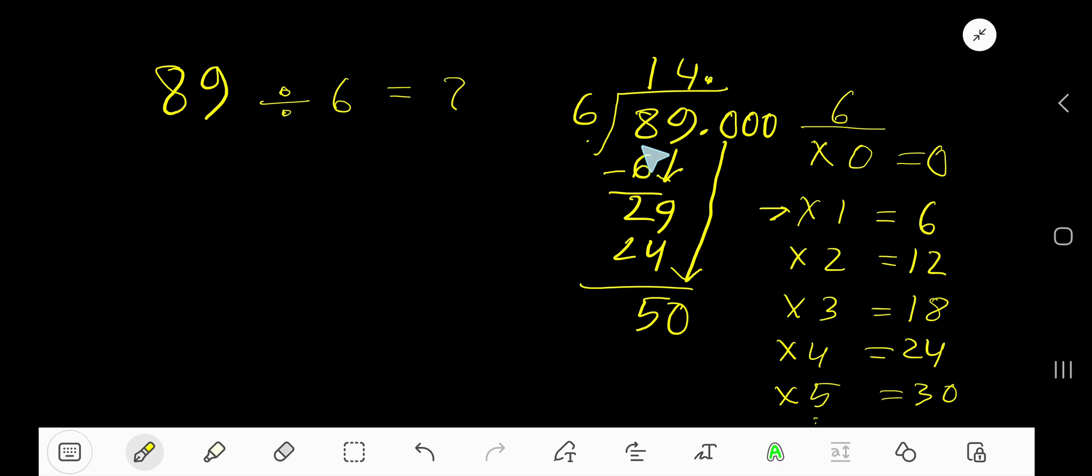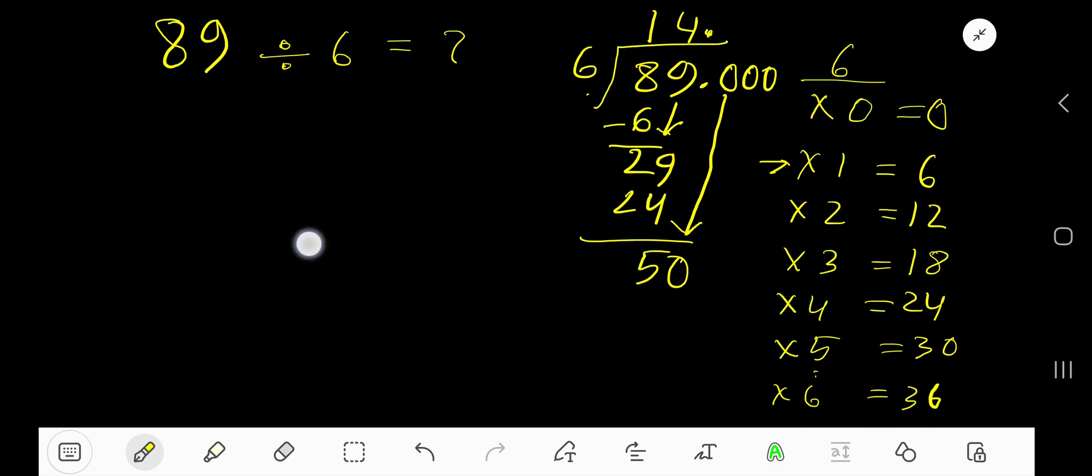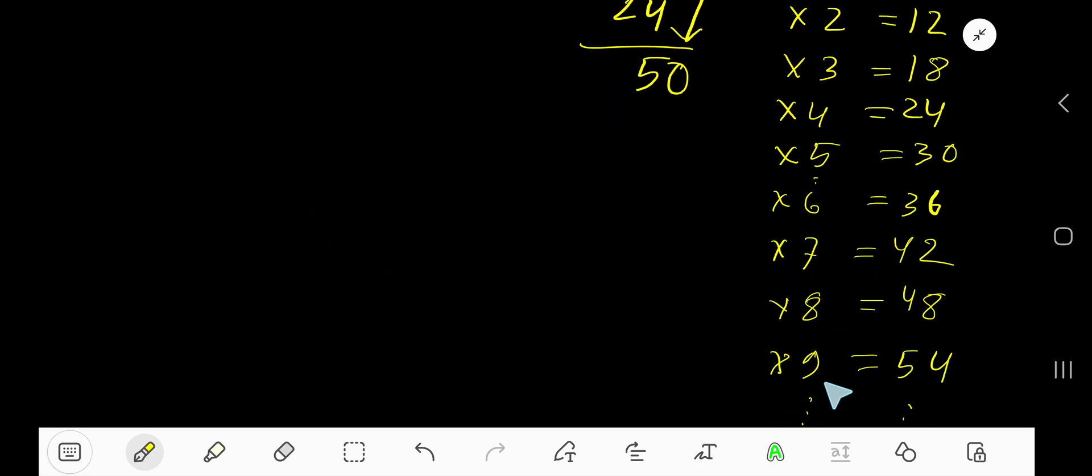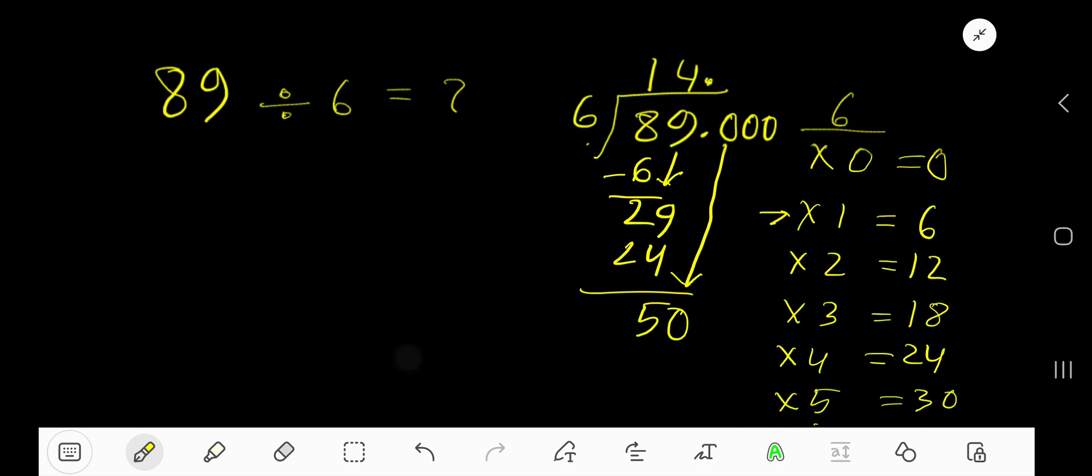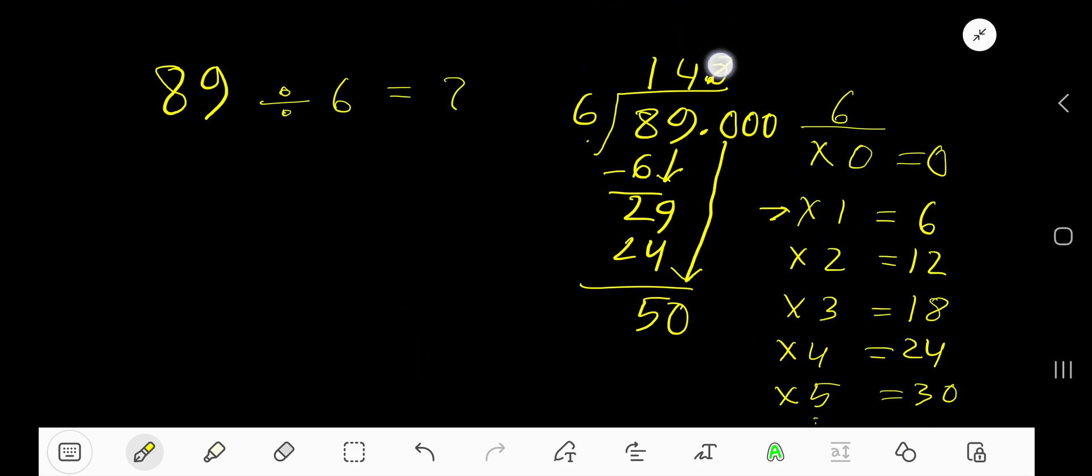Before this 0 there is a decimal. The decimal must come to the quotient directly. 6 goes into 50 how many times? 9 times is 54, so that is 8 times. Write 8. 8 times 6 is 48.